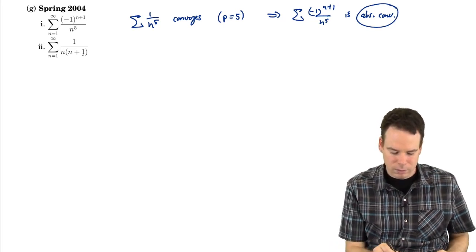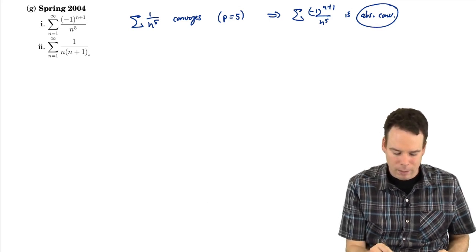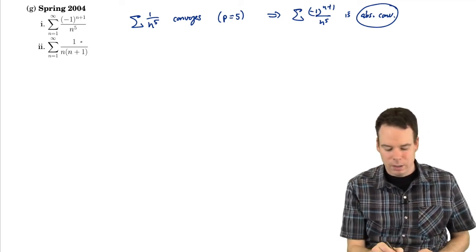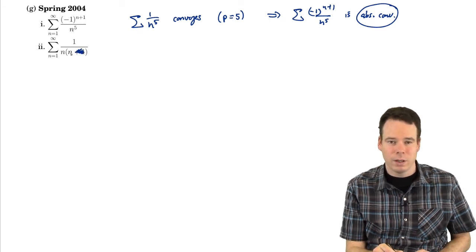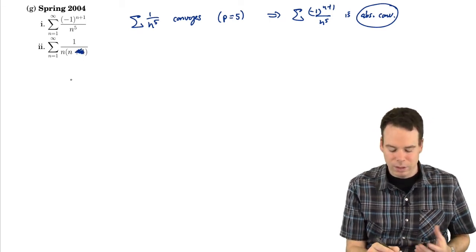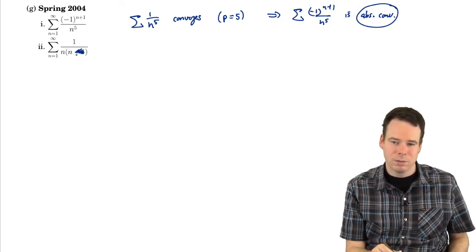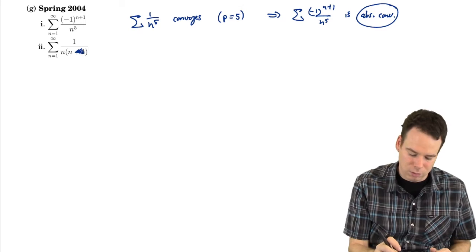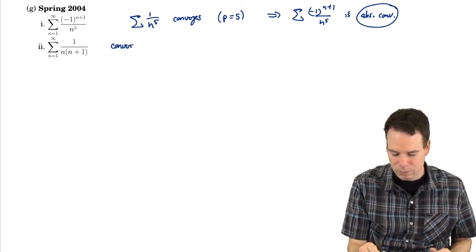What about this next one? Does this converge or diverge? Well, when n is really big, this plus 1 doesn't really matter. The terms look roughly like 1 over n squared, that's convergent. So when n is really big, this thing roughly looks like the p-series when p is 2, which is convergent, therefore this series should converge. So there's my thought process.